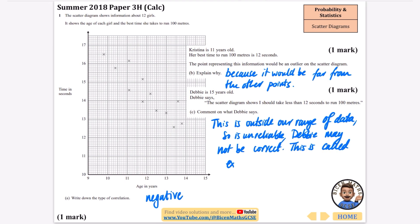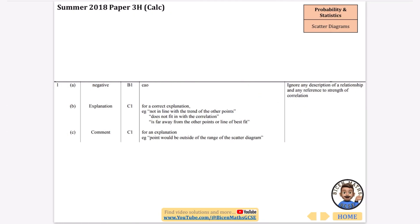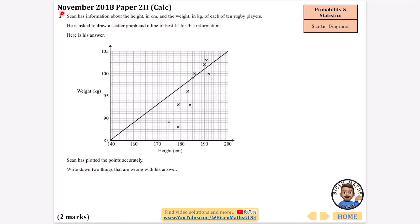They don't even mention this in the mark scheme I don't think, but this is called extrapolation. Interpolation is when it's inside the range, anything between like 10 years old and 14 years old. We've got negative, it's far away from the other points, and the point would be outside the range of the scatter diagram which is what we were talking about with extrapolation. These are all really early on in the exam paper, so they're considered quite easy ones.